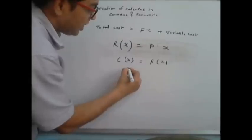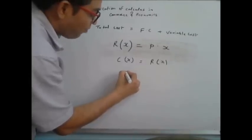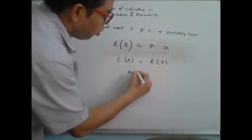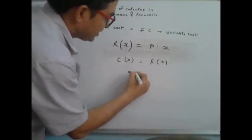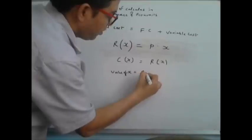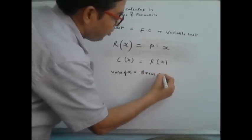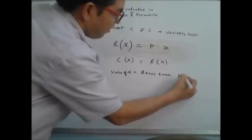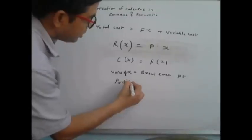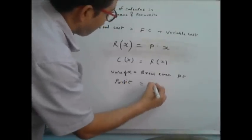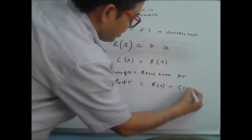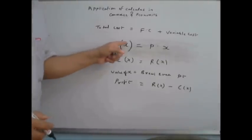When the cost function and revenue function are equal, for that value of x we get break-even — that means no profit, no loss. That value of x is the break-even point. The profit function is equal to the revenue function minus the cost function. This is the profit — these are the basic terms.